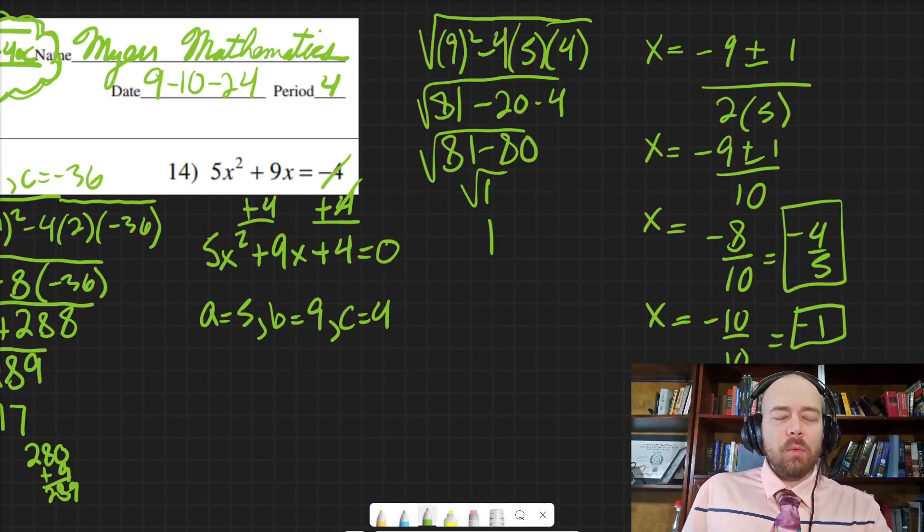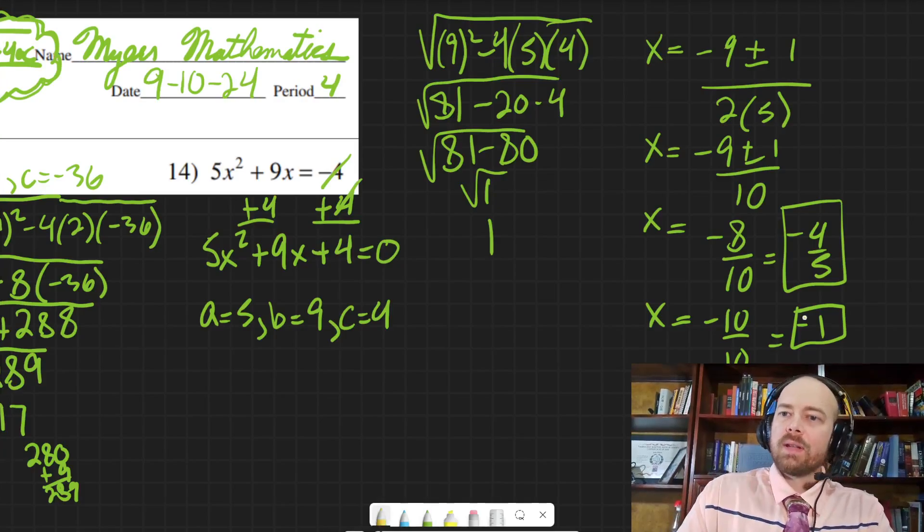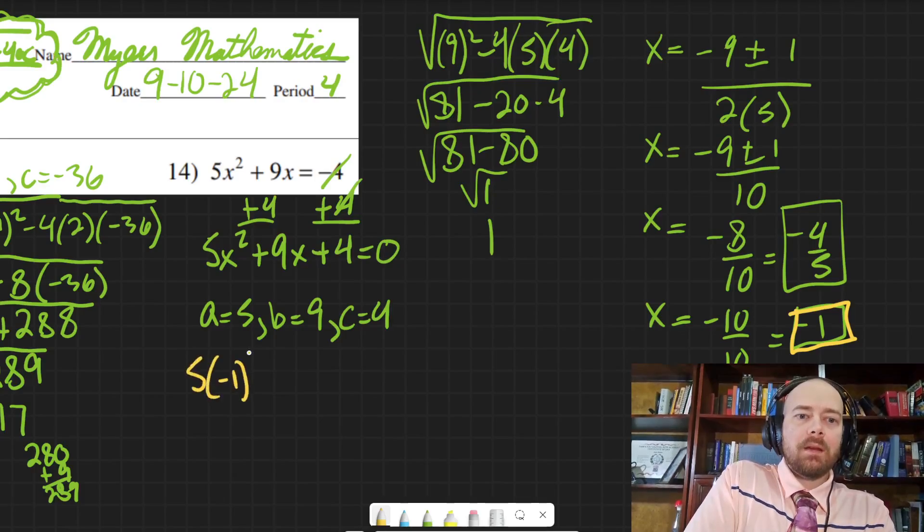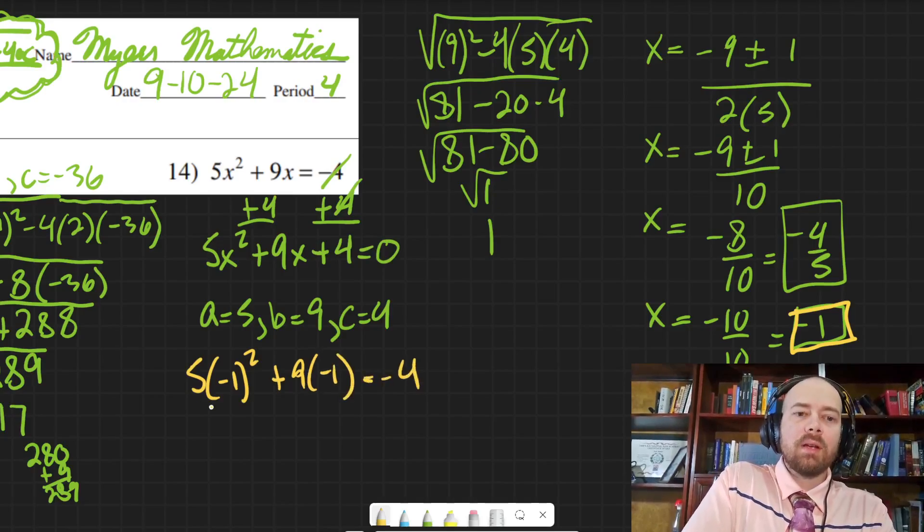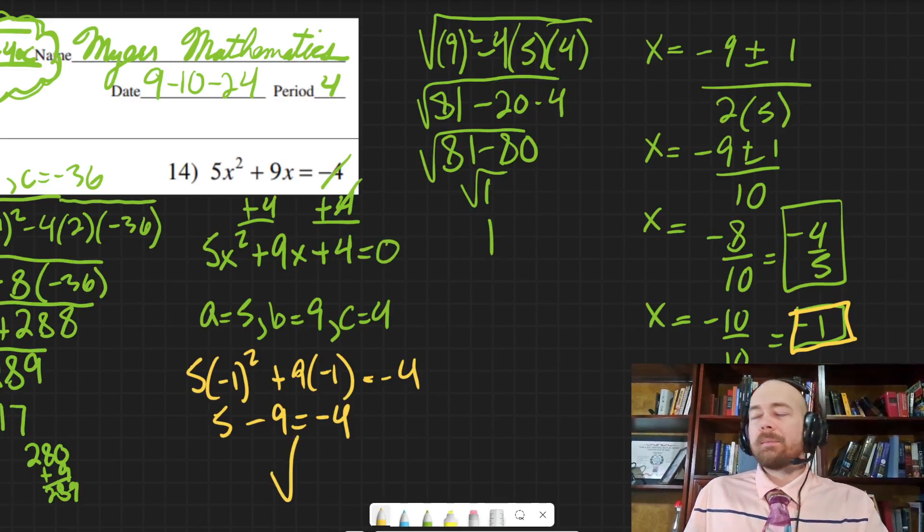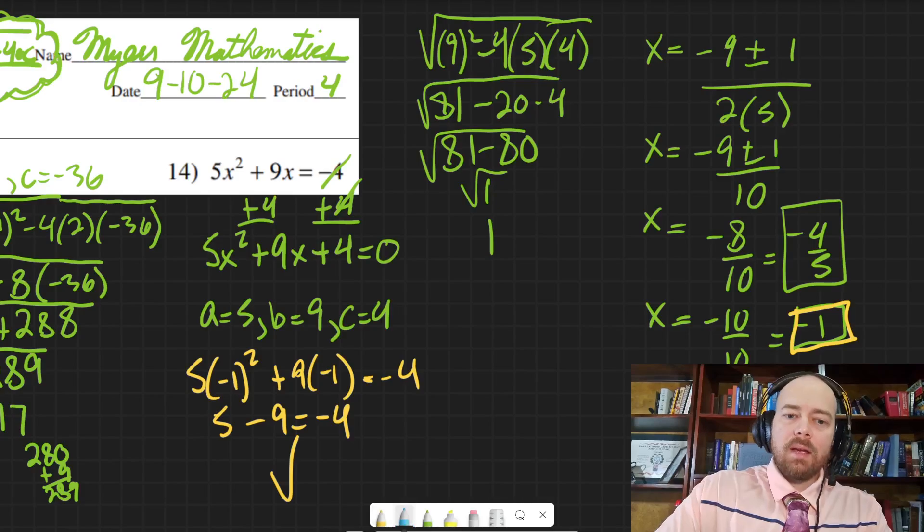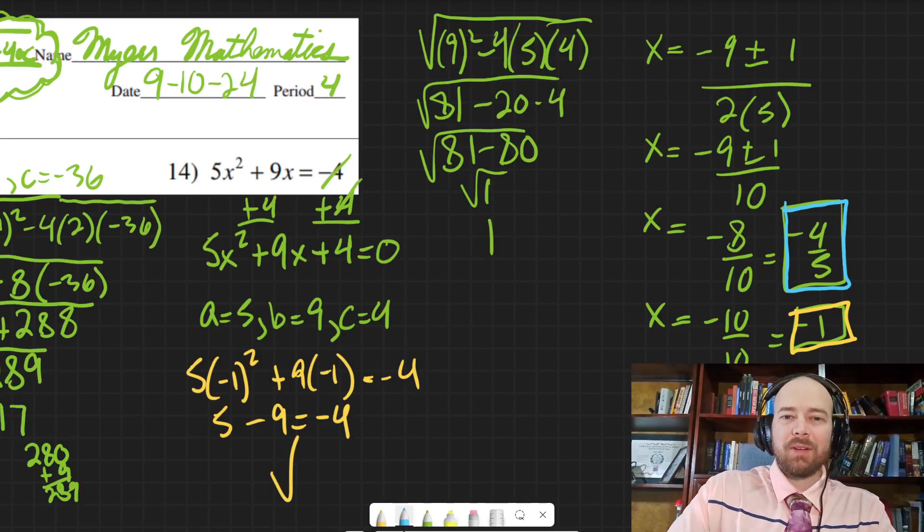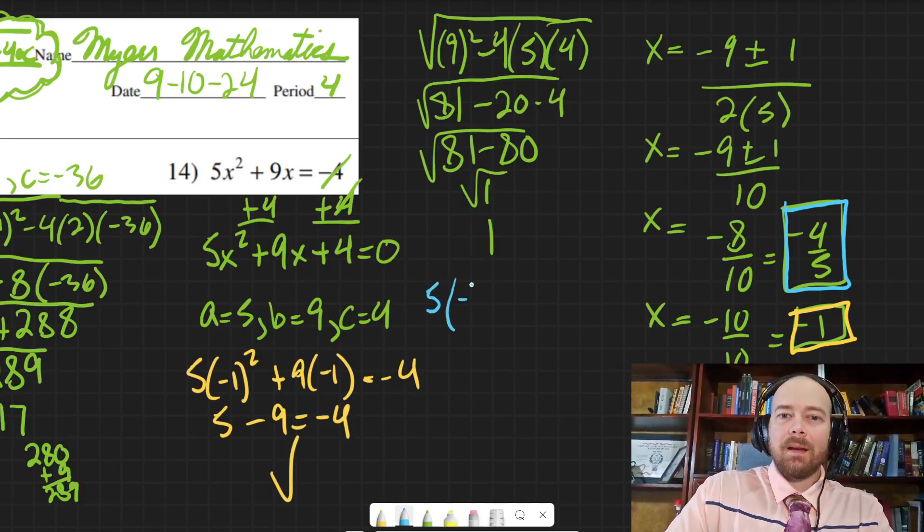And the negative 1 will be pretty easy to check. Let me show you what I'm doing here. So if I plug in that negative 1, that's negative 1, 9, negative 1, negative 4. And then negative 1 squared is 1 times 5 is 5, minus 9. And yeah, look at that. That works. 5 minus 9 is negative 4. And then for the other one, negative 4 fifths. This is going to be a little harder. But you know what? Challenge accepted.